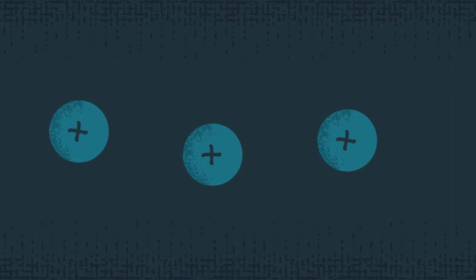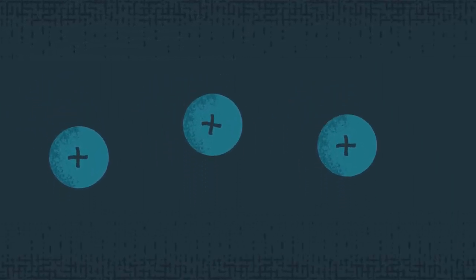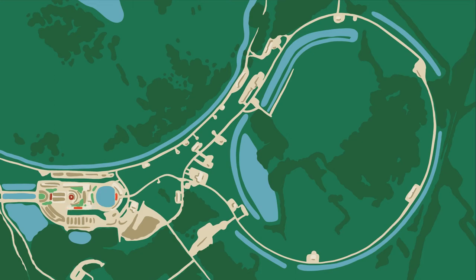But how do scientists make those muons in the first place? It starts with a beam of protons. Trillions of them travel through a series of accelerators: the linear accelerator, booster, and recycler.